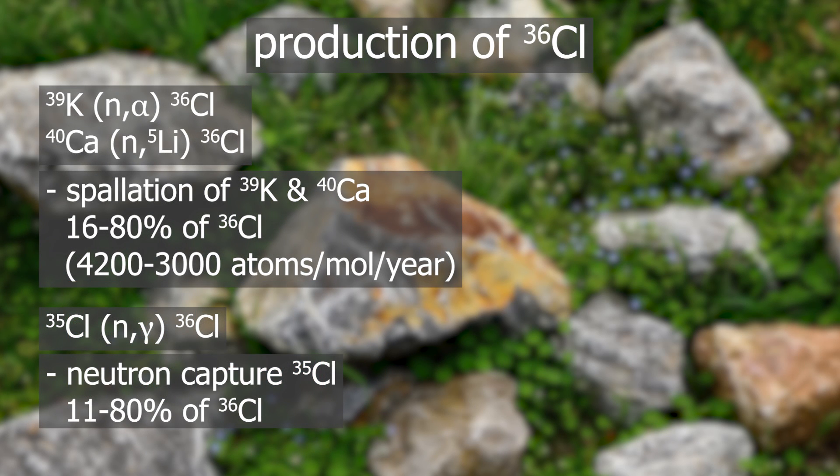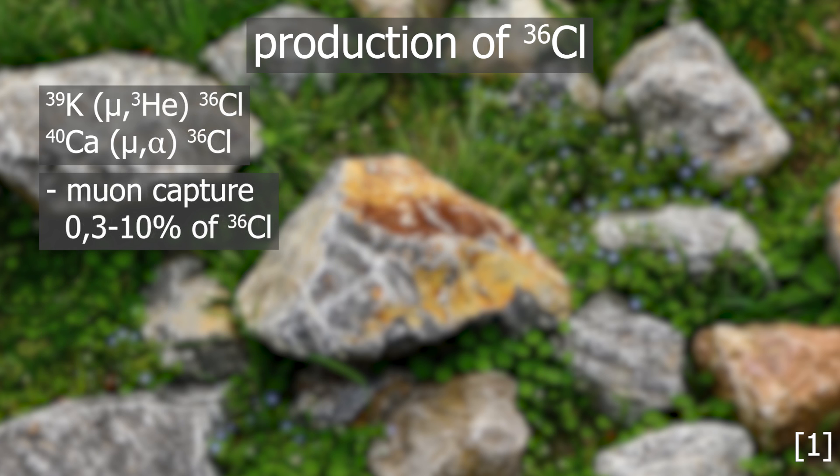Calcium-40 can also become Chlorine-36 by capturing a negative muon via a mu-alpha reaction. This accounts for 0.3 to 10 percent of all Chlorine-36. And Potassium-39 can also undergo muon capture producing Chlorine-36 via a mu-H3 reaction.